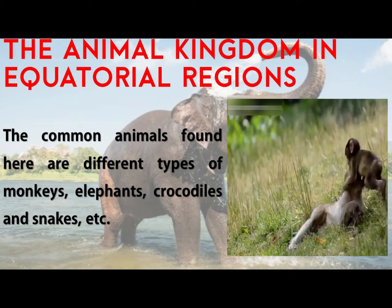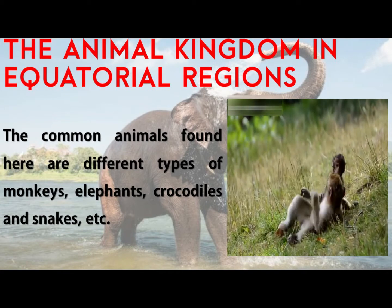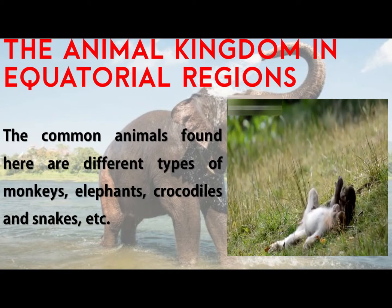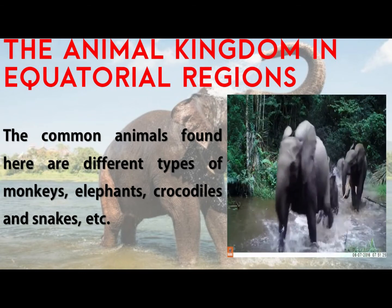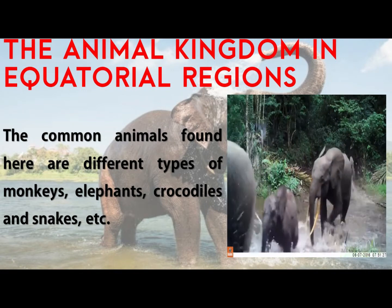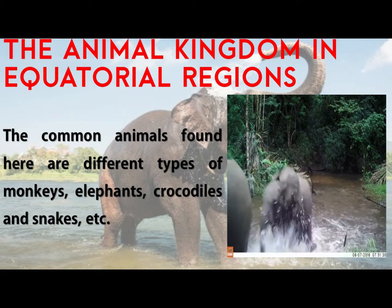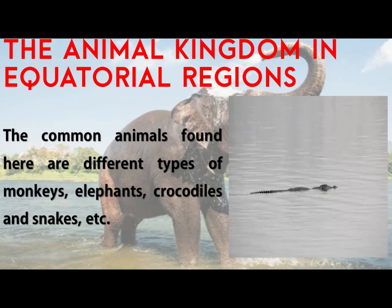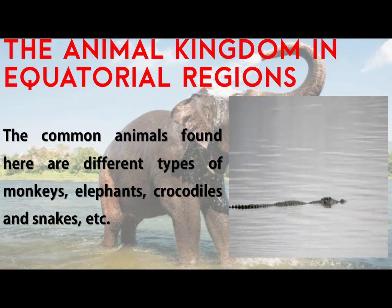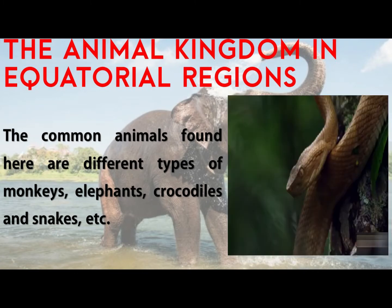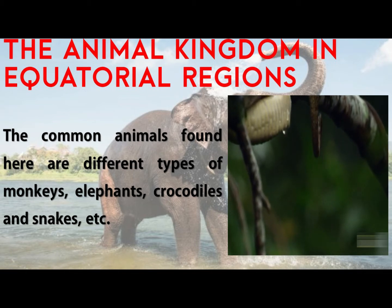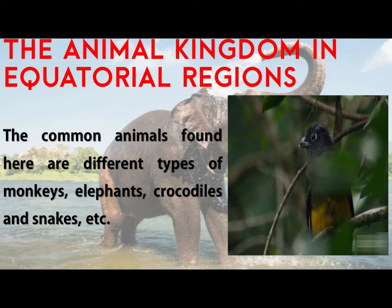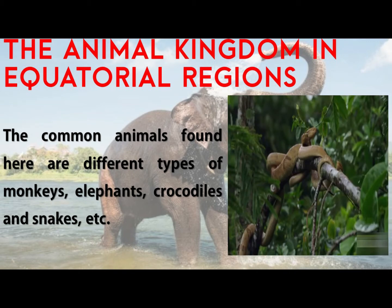Let's see the equatorial regions. As we all know, equatorial regions receive heavy rainfall and high temperature throughout the year, which results in a thick and dense forest that becomes a habitat for a variety of wild animals. The common animals found here are monkeys, elephants, crocodiles, and insect-eating animals like snakes.